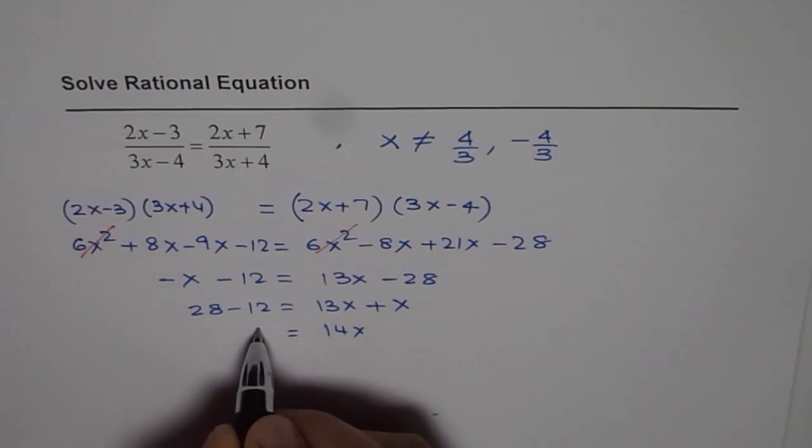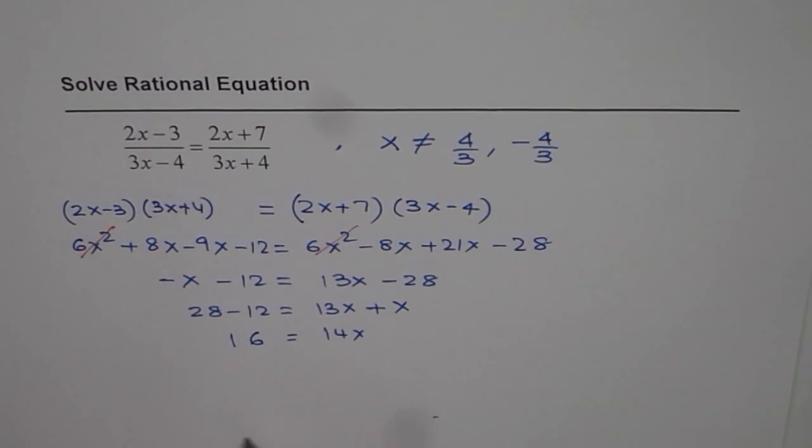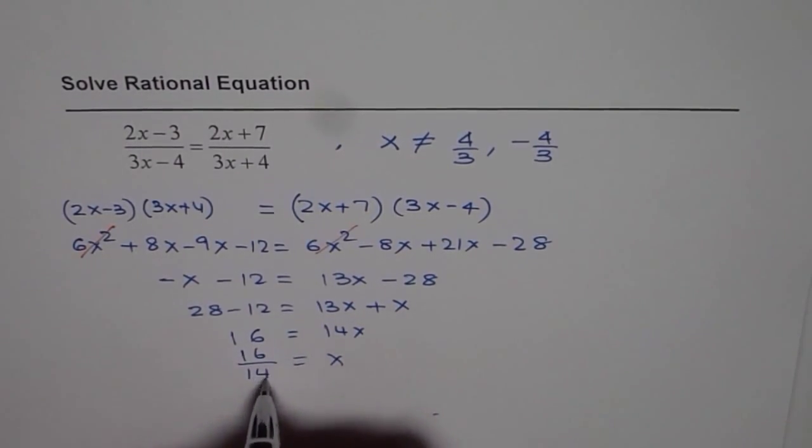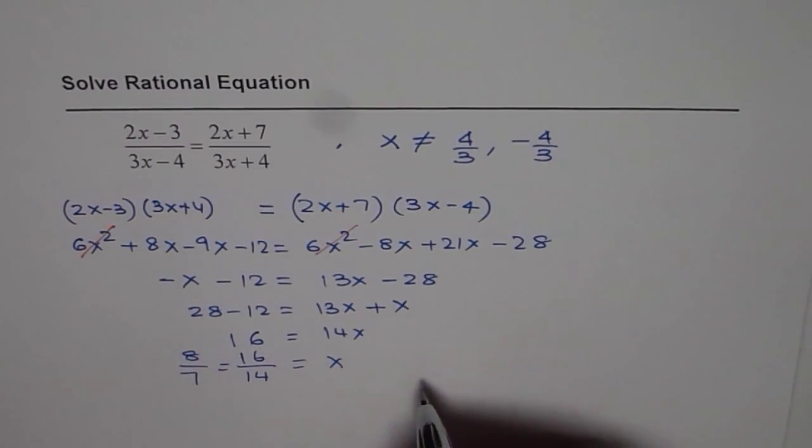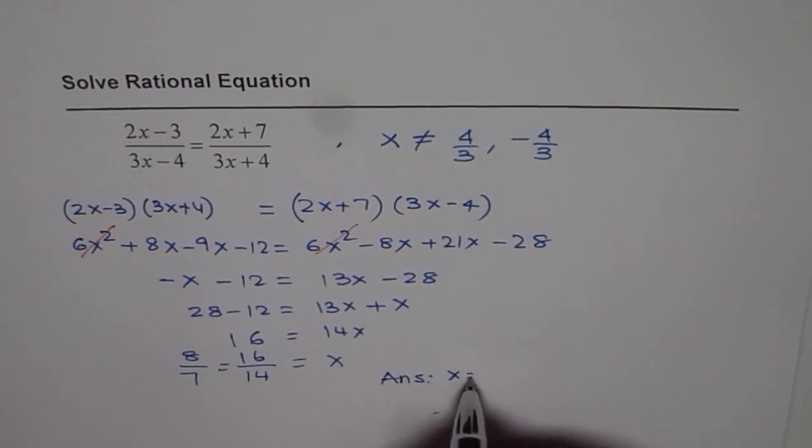So we can divide by 14 and get the value of x as 16 over 14, which simplifies to 8 over 7. So the answer is x equals 8 over 7.